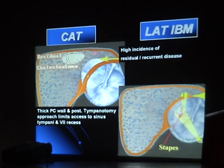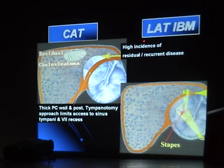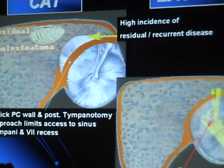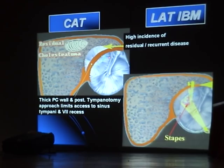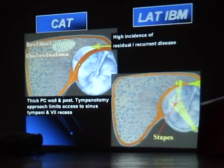If the posterior canal wall is preserved, there is not enough access, leading to residual cholesteatoma. Without a good aeration path — because the tensor tympani and head of malleus interfere — recurrent cholesteatoma occurs. The solution: remove the entire posterior canal wall, but leave only a three-millimeter rim.